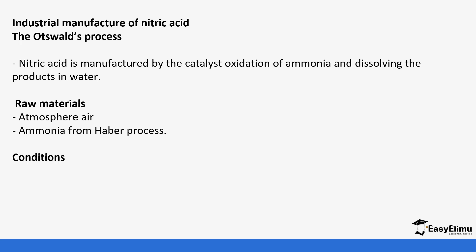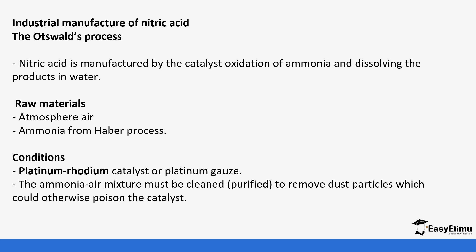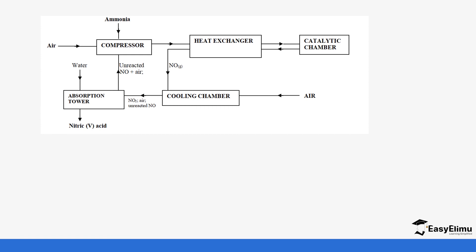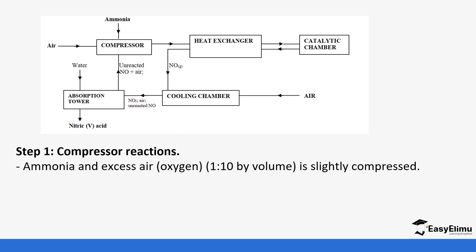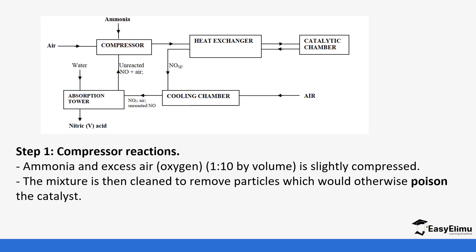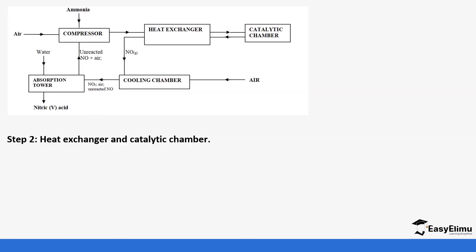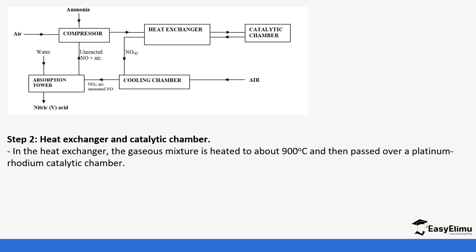The conditions for this process include a catalyst — in this case platinum-rhodium, which is different from the finely divided iron used in the Haber process. The air-ammonia mixture is cleaned and purified to remove dust particles which would otherwise poison the catalyst. The mixture is then passed into the heat exchanger.